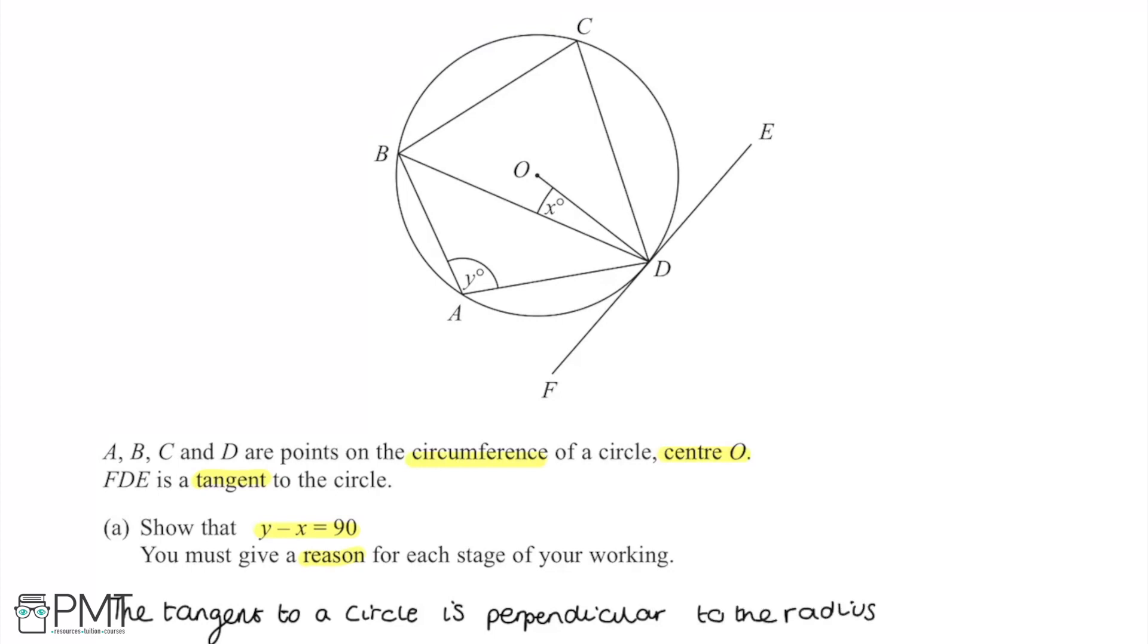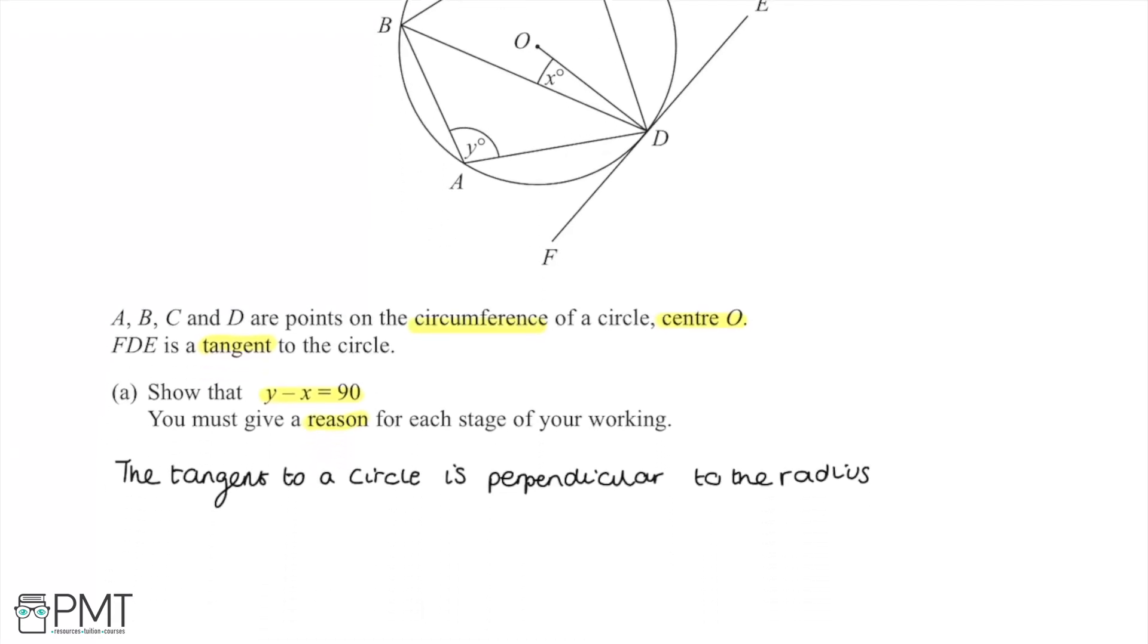Now if I look in the diagram, we have the tangent here and then the radius goes from the centre of the circle to a point on the circumference, so this line OD is the radius of the circle and this meets the tangent here at point D. So the tangent is perpendicular to the radius, so we know that the angle ODE is a right angle, and similarly the angle ODF is also a right angle. Therefore the angle ODE equals the angle ODF and they're both 90 degrees.